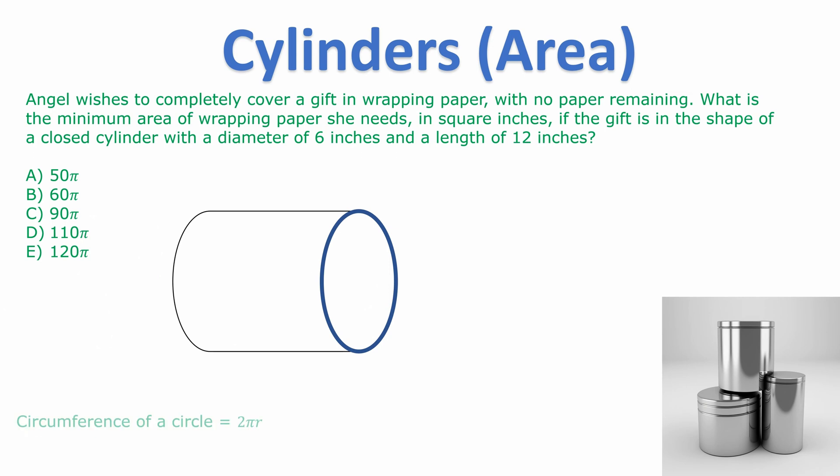So the circumference of a circle is of course 2πr. And then we multiply that by the height to get the curved surface area.